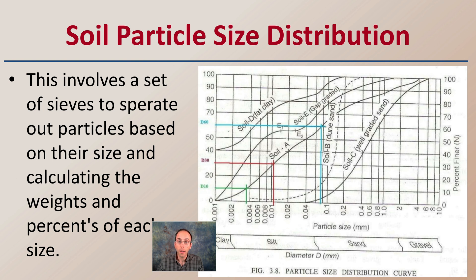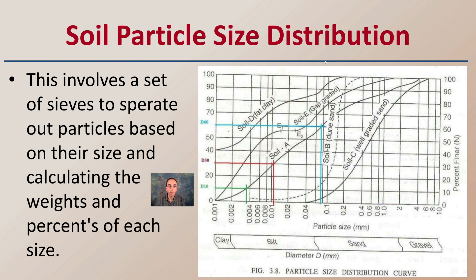Particle size distribution refers to what percentage of clay, silt, sand, and gravel is present in the soil. This can involve a set of sieves to separate particles based on their size, then calculating the weights and percentages of each size. This is just another factor — another way to help classify that soil and get a bit more specific.